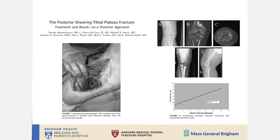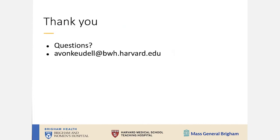From our clinical results at MGH: intraoperative photographs show going from the medial side all the way to the lateral side, with the medial head of the gastrocnemius divided and retracted. When doing that, make sure to identify the neurological structures first. Thank you so much, and feel free to reach out with any questions by email.